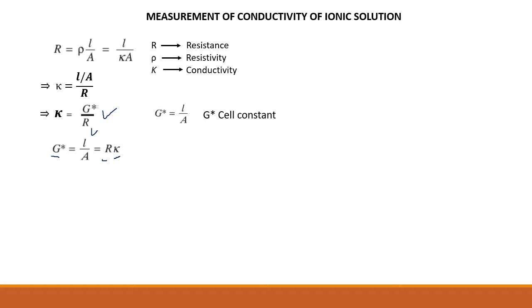Now, extracting the resistance value — for a solution, extracting the resistance value is difficult. Because in the case of Kelvin bridge, in that case, a steady current would flow, and then the voltage would decrease — gradually decrease.